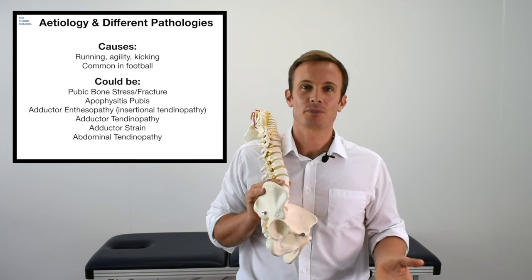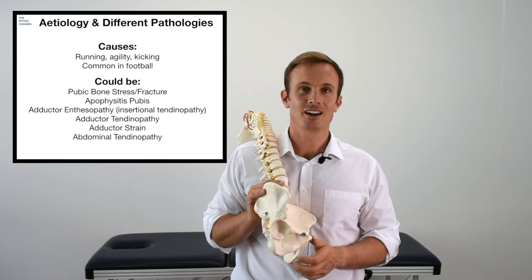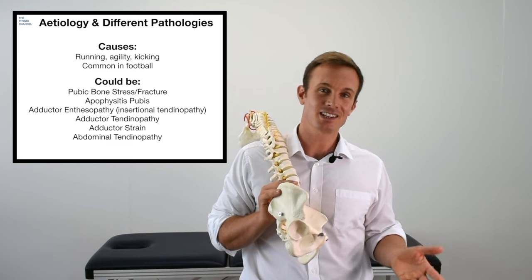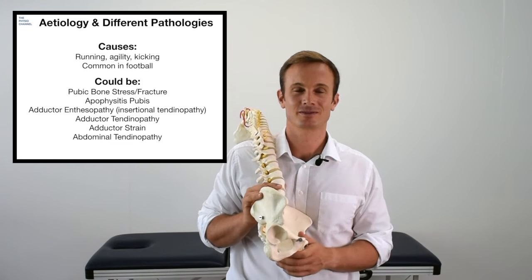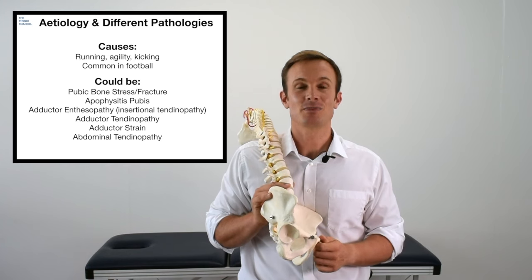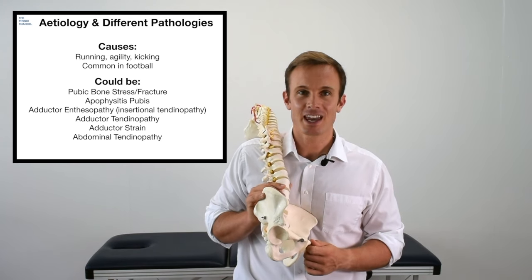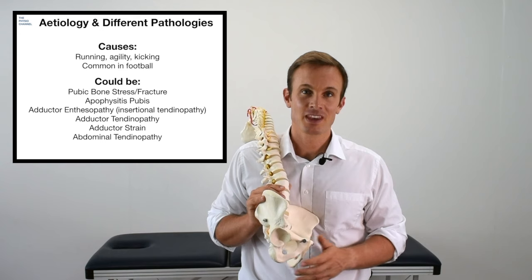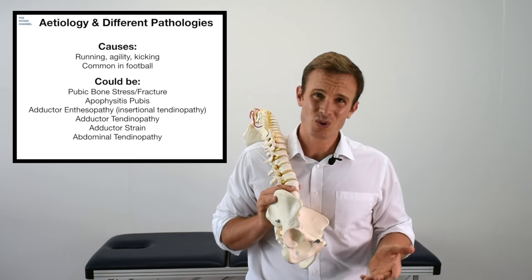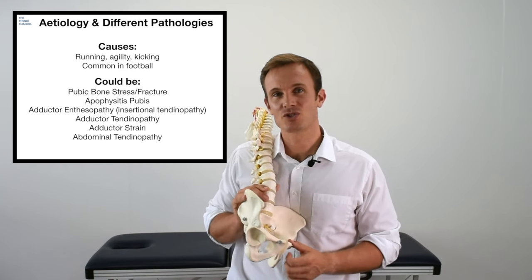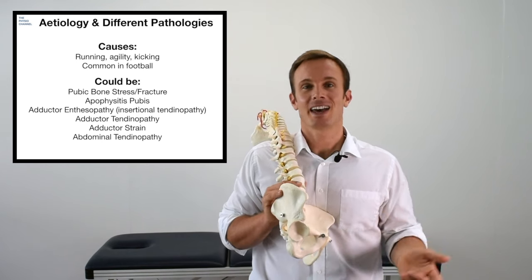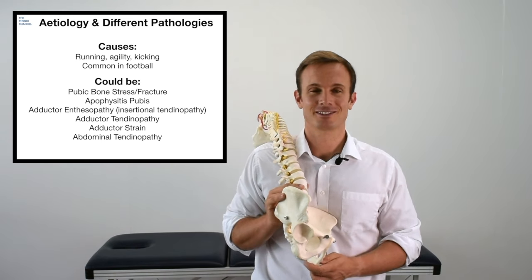The presentation of this pubic bone stress response would be very similar to that of adductor tendinopathy. Pubic apophysitis is more common in young athletes in the age range of 16 to 21. As a diagnosis this can be significantly aided by an MRI scan. If that is not available, you'll have to begin with a treatment and management plan and carefully monitor their response.